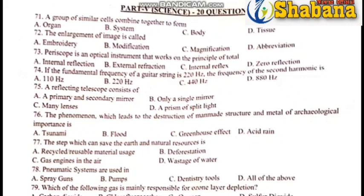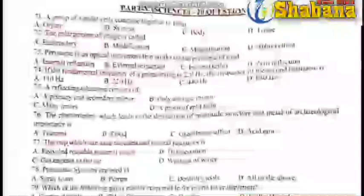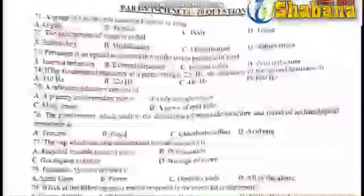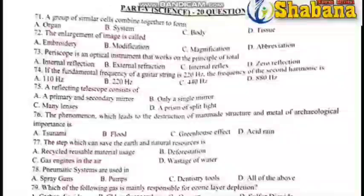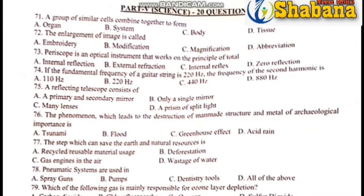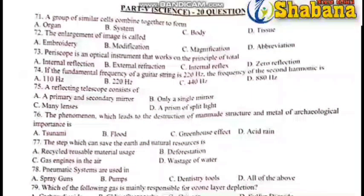Question number one: The answer is D. A periscope is an optical instrument that works on the principle of internal reflection. The periscope works at 90 degrees and the reflection is internal.